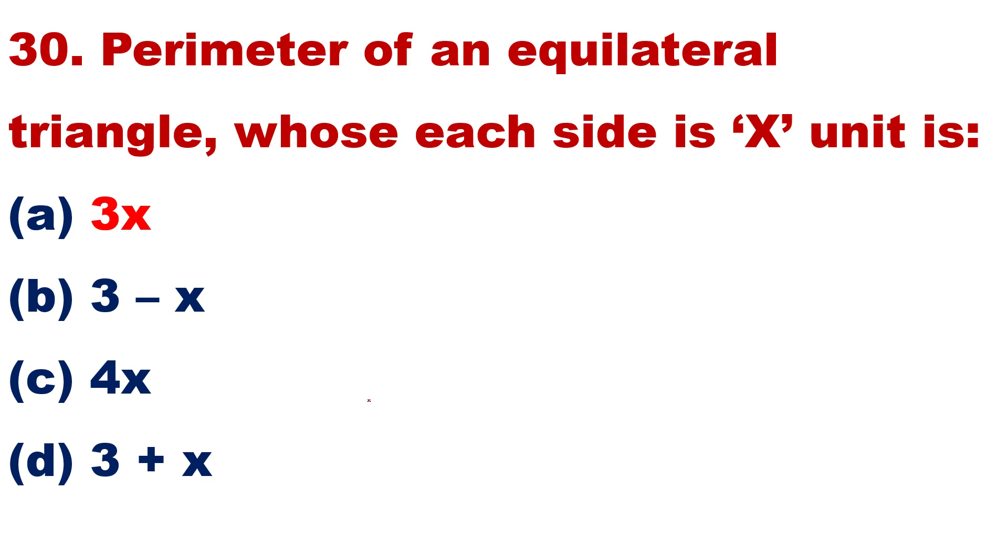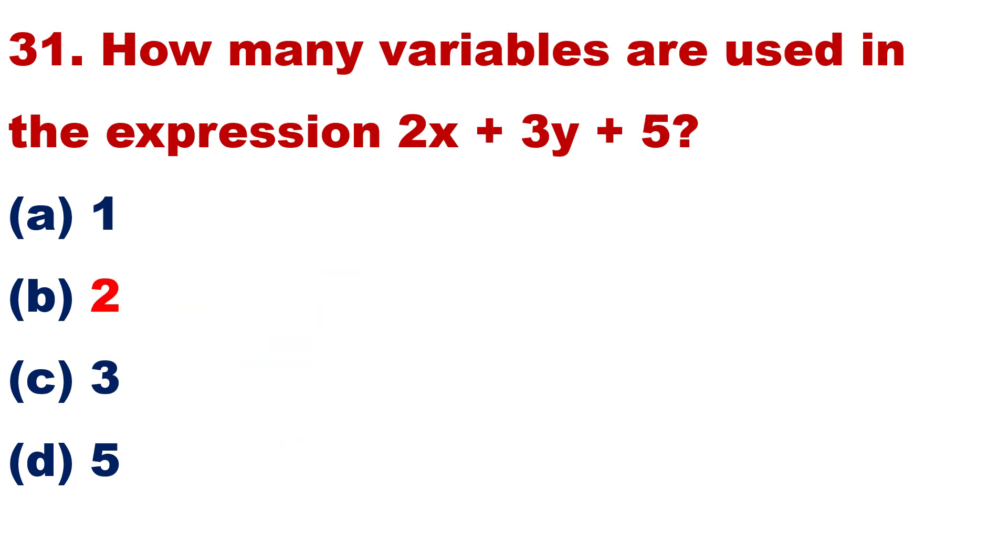30. The perimeter of an equilateral triangle whose each side is X unit. Very simple answer. Inhi mein se koi hai ABCD mein se. 31: How many variables are used in the expression 2x plus 3y plus 5? Variable, very simple.